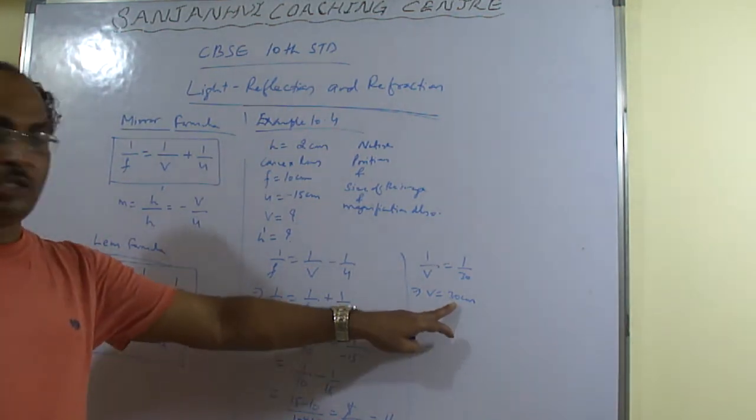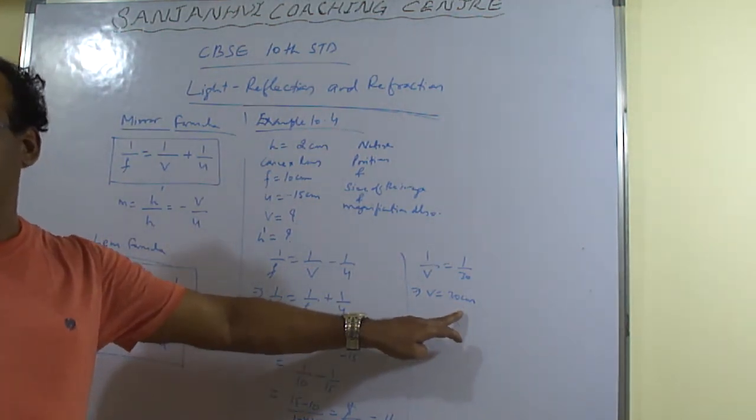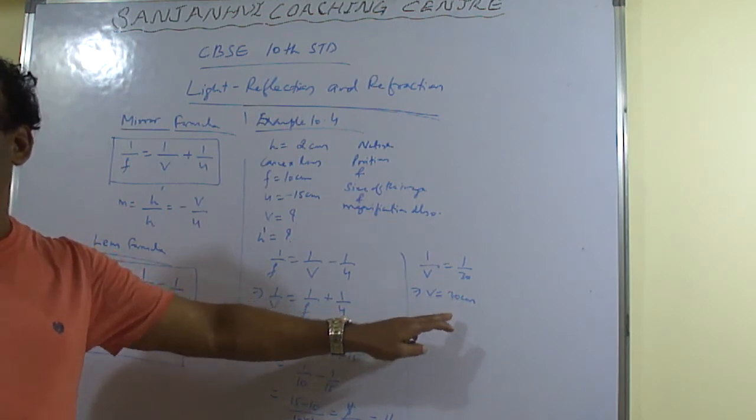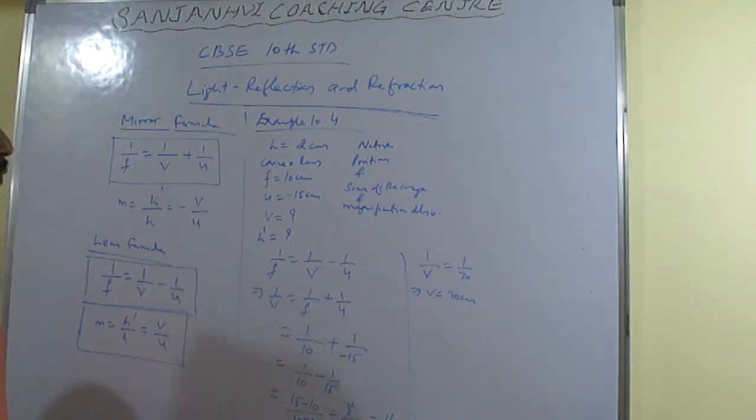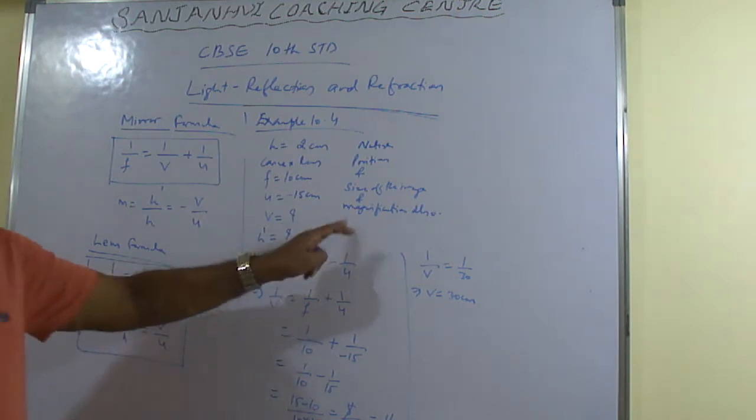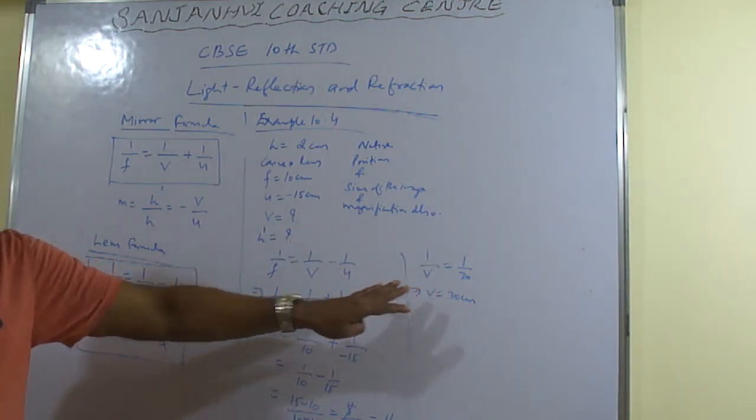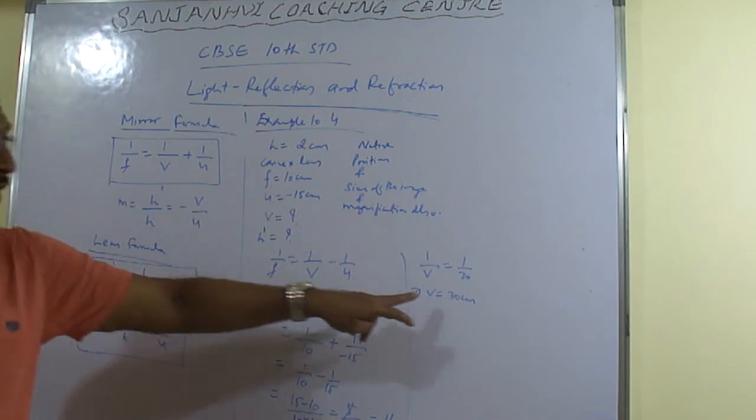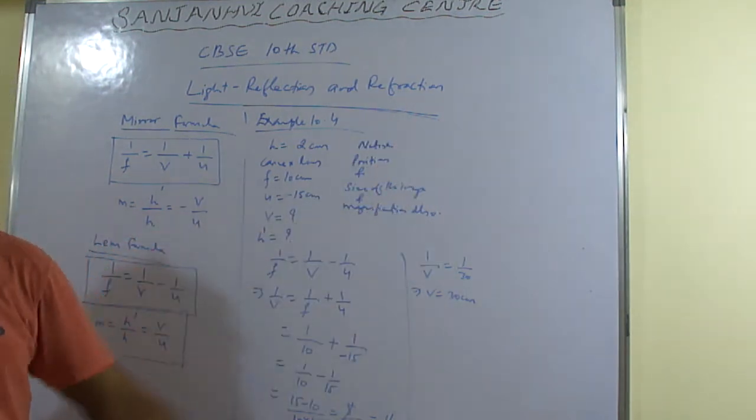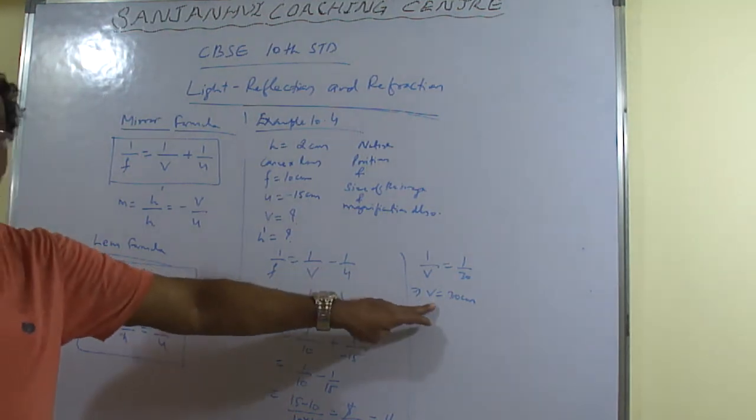And v is positive. Now v is positive. So now what it will be there? The image is formed on another side of the mirror. U is minus 15. Image is forming on another side of the mirror. And that took 30 cm away from the mirror.